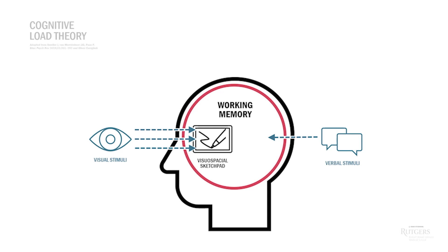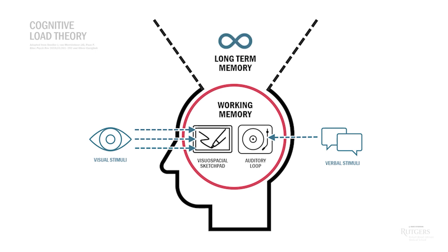Auditory processing — this sequential processing of auditory information is called the auditory loop. So we get tired of listening to information quicker than we do of viewing it. Unlike the limited working memory, our long-term memory seems to have infinite capacity. So our major goal when teaching becomes to minimize distractors and to help working memory easily identify important information and encode it into long-term memory storage.